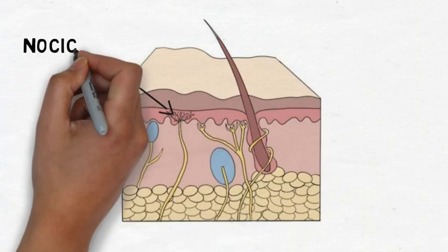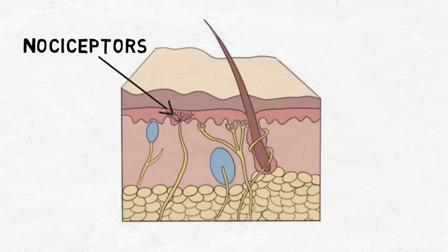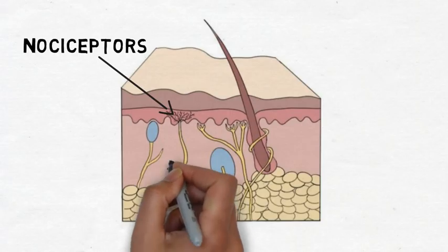Pain begins at nociceptors, cutaneous receptors that are specialized to detect noxious stimuli like extreme pressure, very hot or cold temperatures, or tissue damage. When activated, nociceptors send a signal to the spinal cord.